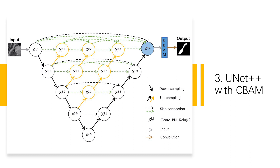We introduced the Attention Mechanism CBAM, the Convolutional Block Attention Module, to enhance the feature map and improve semantic segmentation accuracy. The CBAM model enables the network to quickly locate the region of interest in the feature map. Due to the small size of our images, we only introduce CBAM before the final convolution operation in the decoding part. First, the feature map generated by X04 is processed by CBAM, and then a convolutional operation is performed to obtain the output result.